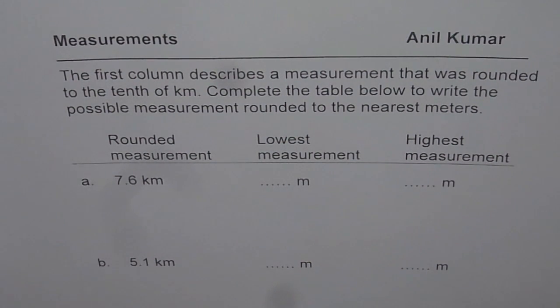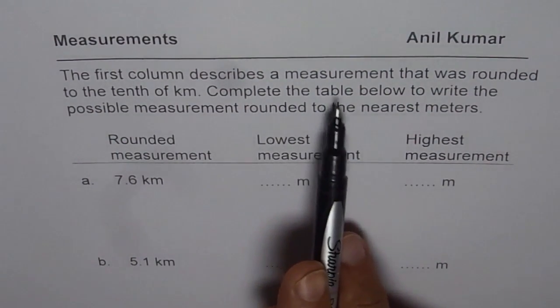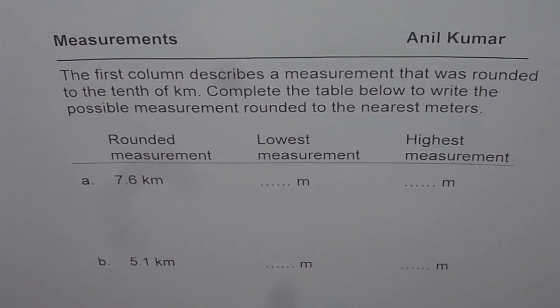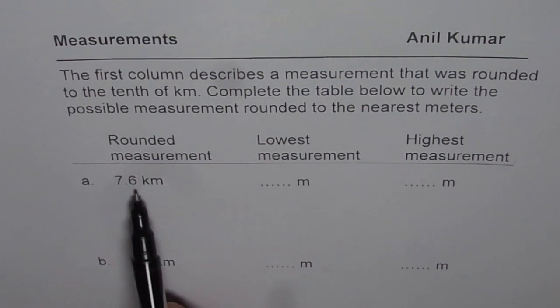The question here is, the first column describes a measurement that was rounded to the tenth of kilometer. So that's the first column. You see the rounded measurements 7.6 kilometer and 5.1 kilometer.